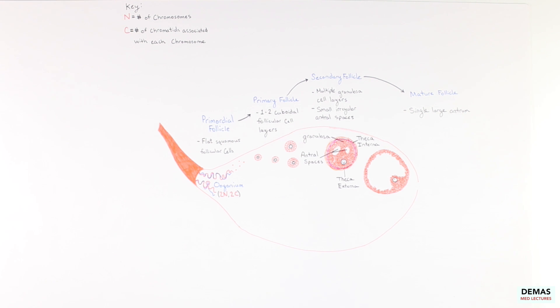Within the mature follicle, the remaining granulosa cells that surround the oocyte are a structure known as the corona radiata, and the stalk of cells anchoring the oocyte to the follicle wall is known as the cumulus oophorus. The mature follicle, like the secondary follicle, also contains a prominent internal and external theca layer.